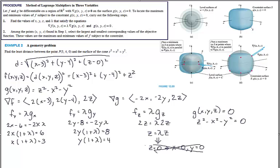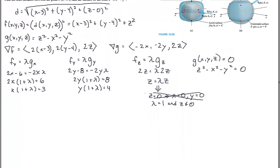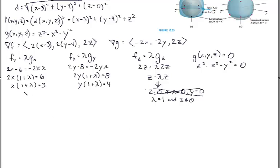So that is not the case. My other scenario is that lambda must be equal to 1 and z cannot be equal to 0. So let's plug that in because that is the only case that could exist here. And if lambda is 1, that means that x is 3/2 and y is 2.